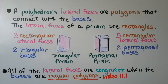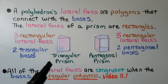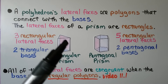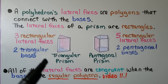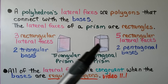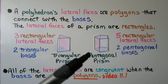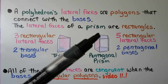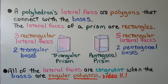A polyhedron's lateral faces are polygons that connect with the bases. The lateral faces of a prism are rectangles. So here we have a triangular prism, and it's got three rectangular lateral faces and two triangular bases. Here's a pentagonal prism, and it's got five rectangular lateral faces and two pentagonal bases — a pentagon up here and a pentagon down there. And all of the lateral faces are congruent when the bases are regular polygons. We learned about regular polygons in video 11.1.